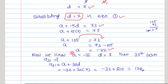Now we know that the first term a = -32 and common difference d = 7. To find the 31st term, we use a_31 = a + 30d = -32 + 30(7) = -32 + 210 = 178.